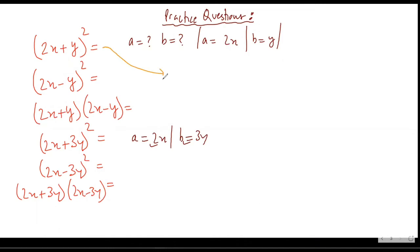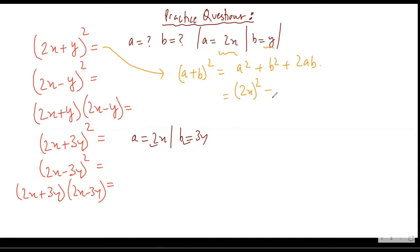In this question my a is 2x and my b is y. The identity I'll be applying is (a + b)² = a² + b² + 2ab. Now a is 2x, so (2x)² plus y² plus twice of a into b. Satya, have you understood what I've done? Yes. So (2x)² would be equal to 4x².